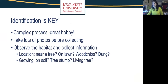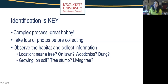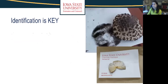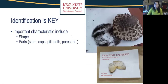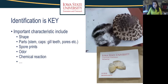Proper identification is key. Even though it's a complex process, it's a great hobby. I recommend always taking lots of photos before collecting a specimen. As you're in the woods, observe the habitat and collect as much information as possible, because that will help you as you take the specimen home and identify it. Characteristics to include are the shape of all parts — stem, cap — spore print, color, and odor. Sometimes chemical reactions are important too; when identifying mushrooms in the clinic, I run a KOH test or iron sulfate test. A dichotomous key is very common: a series of questions and an elimination process to pinpoint what you have.